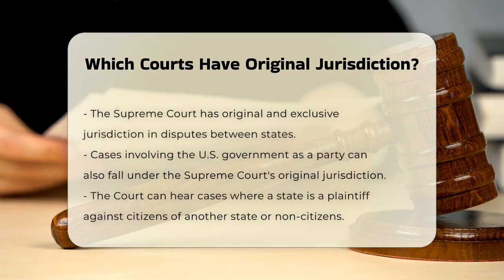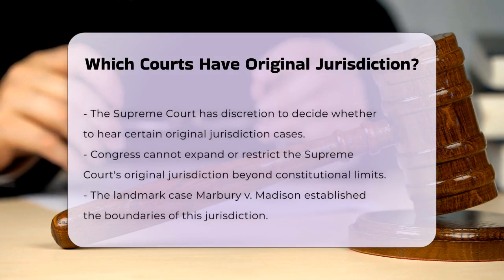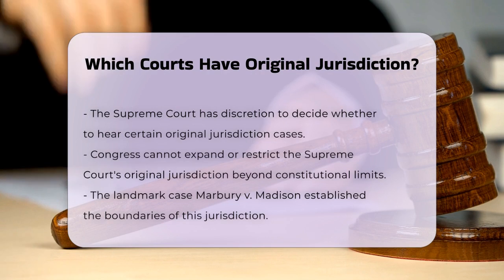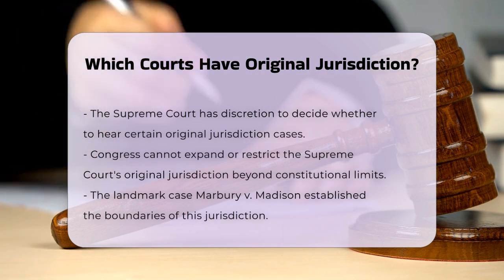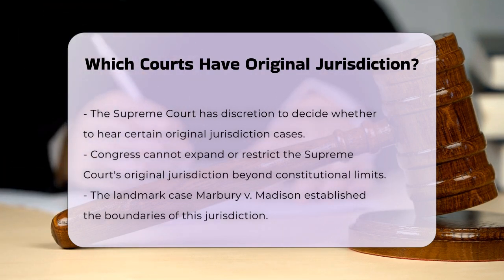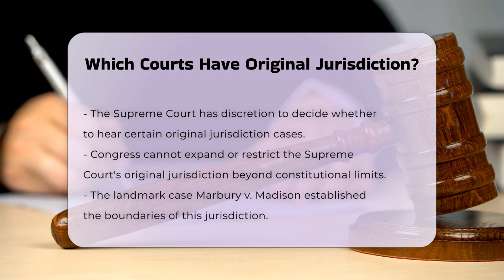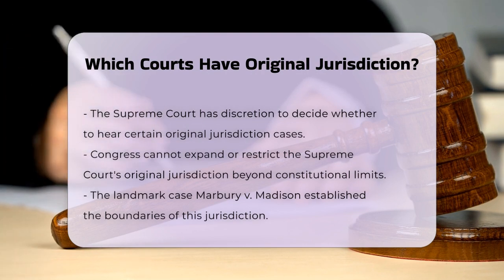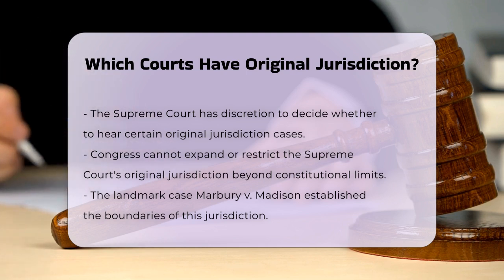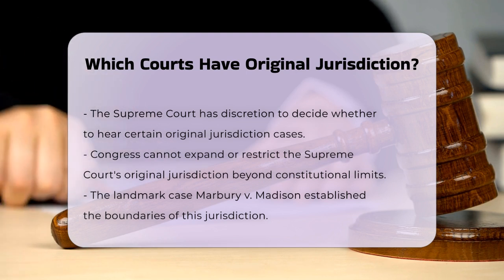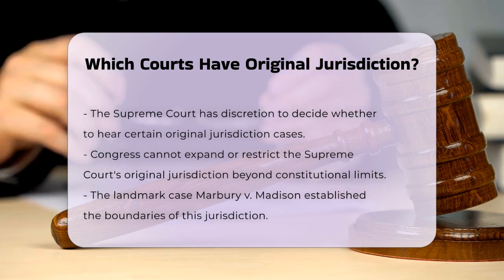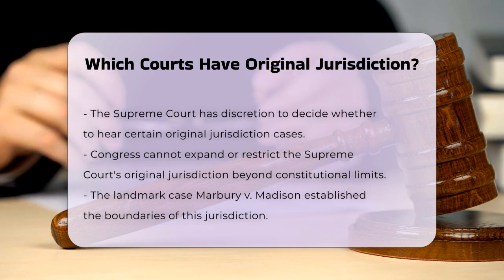In addition to these, the Supreme Court also has original jurisdiction over cases involving a state as a plaintiff against the citizens of another state or against non-citizens. However, it's worth noting that the Supreme Court has the discretion to decide whether or not to hear these cases. While the Supreme Court's original jurisdiction is quite specific, it's important to remember that Congress cannot expand or restrict this jurisdiction beyond what is granted by the Constitution.